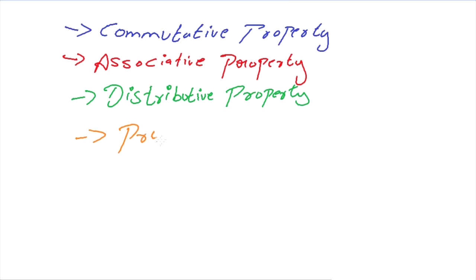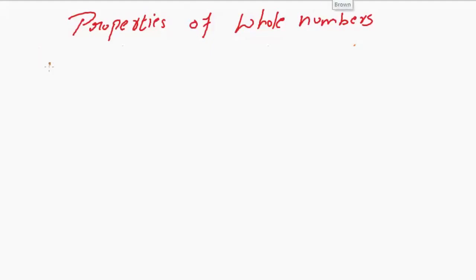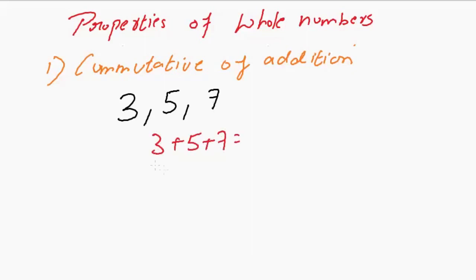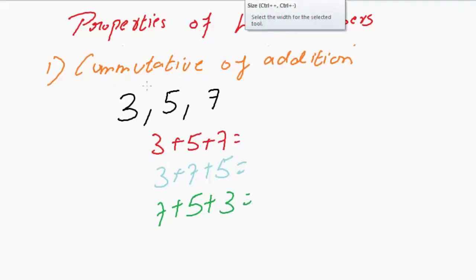We are also going to learn about problems. The first one is the commutative property of addition. Let us consider three whole numbers: 3, 5, and 7. You will have to add these three whole numbers. You can add this as 3 plus 5 plus 7, or you can also add it as 3 plus 7 plus 5, or you can write it as 7 plus 5 plus 3. Commutative property means when the numbers are added in any order, you will get the same answer.